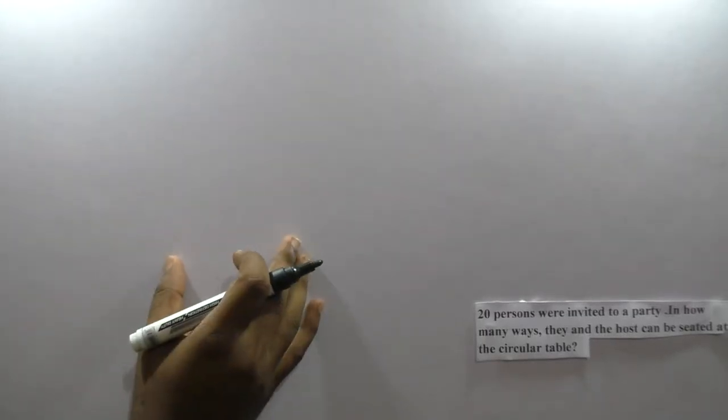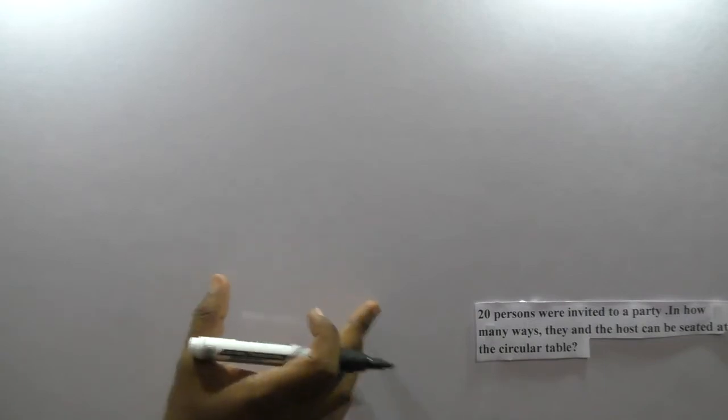Hi friends, in the topic of permutations, here's a problem: 20 persons were invited to a party. In how many ways can they and the host be seated at a circular table? First, in permutations we're talking about circular table, an important concept.